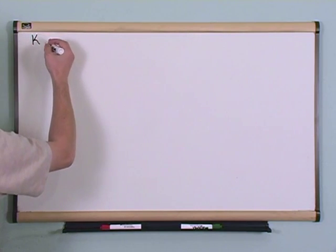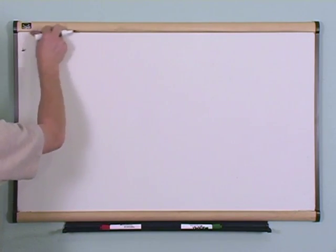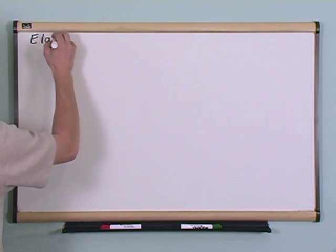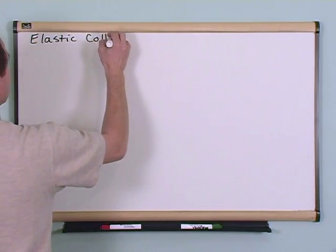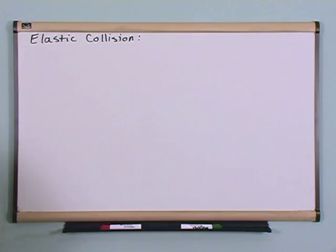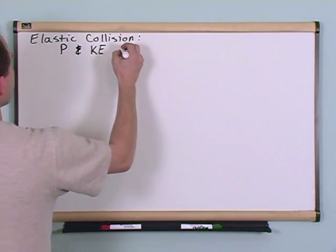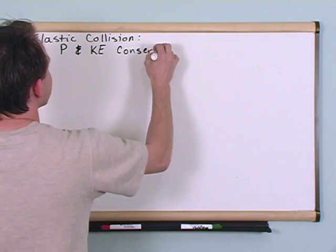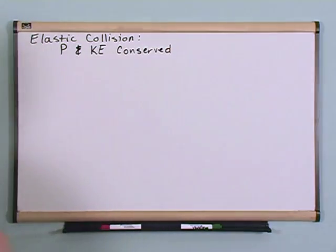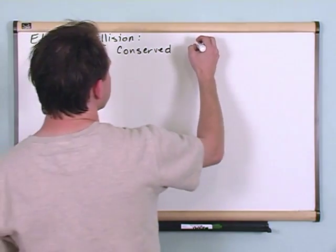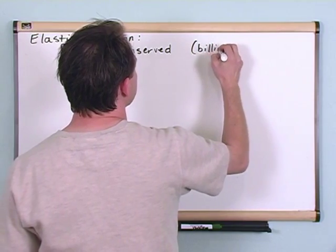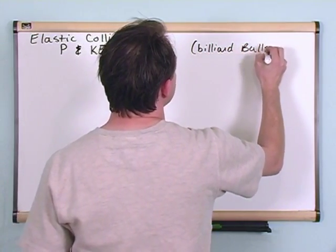In an elastic collision, both the momentum P and the kinetic energy are conserved. Conserved just means it's constant before and after the collision. An example of this would be billiard balls — a ball that doesn't flex.